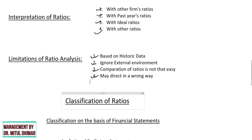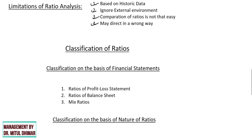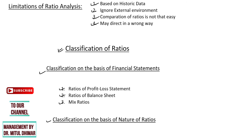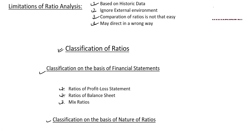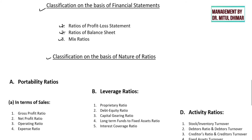Now moving on to the most important topic — classification of ratios. Generally we classify ratios on two bases. First, classification on the basis of financial statement, and second, classification on the basis of nature of the ratios. If we classify on the basis of financial statements, there will be three types: first, ratios of profit and loss statement showing the relationship between profit and loss particulars only; second, ratios of balance sheet showing the relationship between balance sheet particulars only; and third, composite ratios showing the relationship between particulars of both the profit and loss statement and balance sheet.